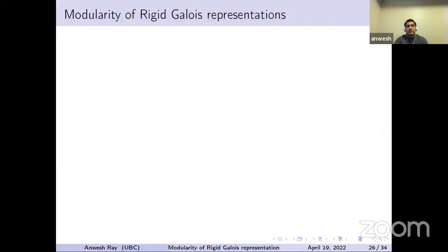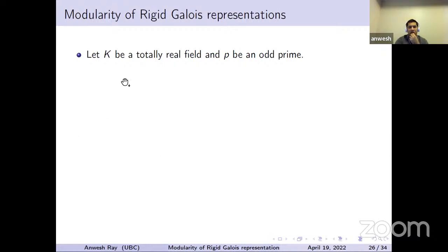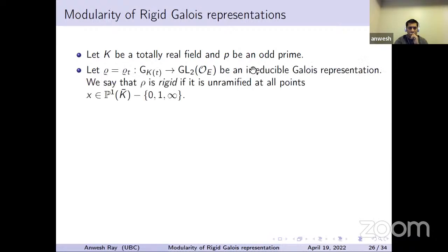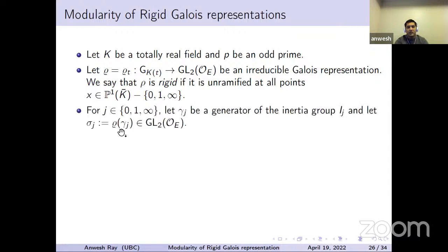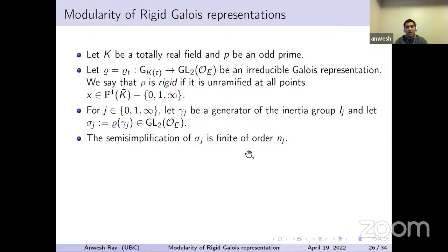Now we come to modularity of the rigid Galois representations. A rigid Galois representation is one that is unramified away from the points 0, 1, infinity. At these points, let gamma_j be a generator of the inertia group and sigma_j be its image in GL_2(O_E). The semisimplification of sigma_j has finite order n_j. N is the LCM of n_0, n_1, and n_infinity. If we have such a rigid Galois representation, the field of definition K must necessarily contain the totally real subfield of Q(zeta_N), where N is this LCM.